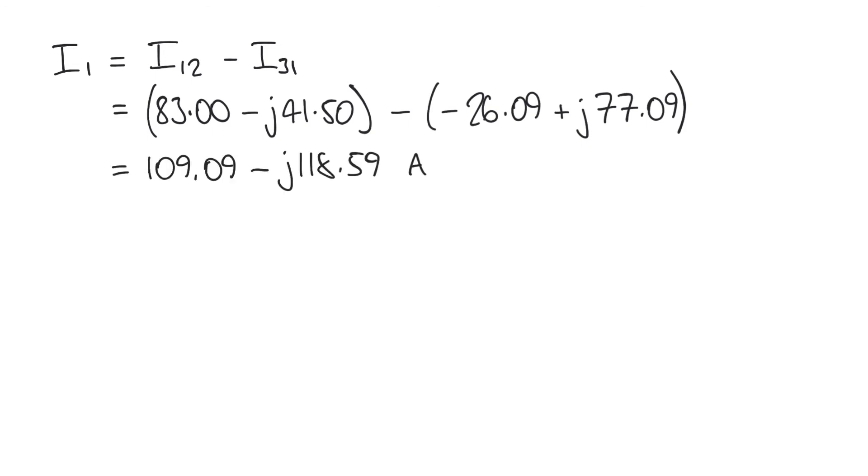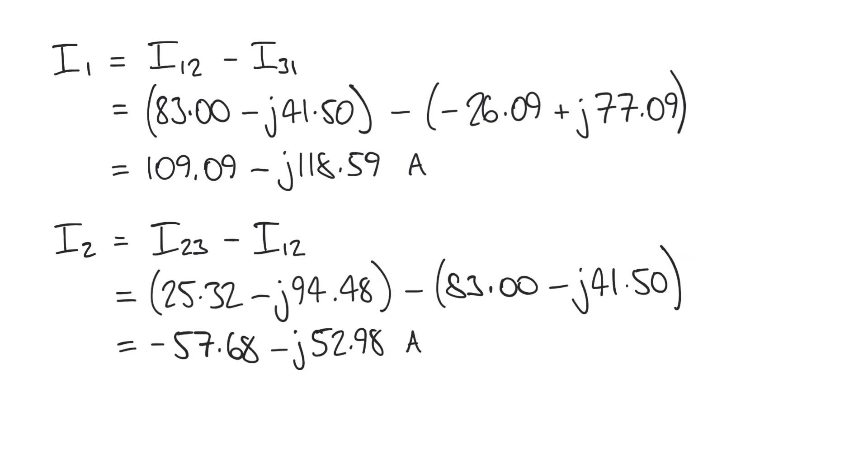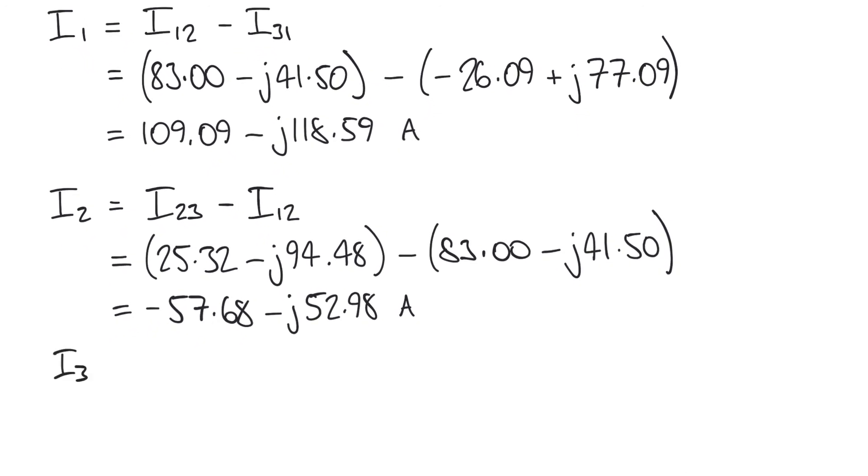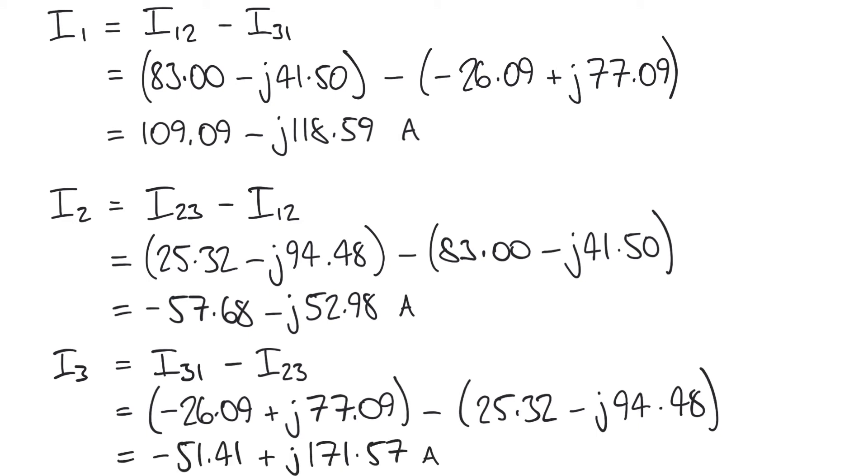We can do very similar for I2, which is I23 minus I12. Putting those values in, we get a result of minus 57.68 minus J52.98. And for I3, we said was I31 minus I23. Again we know the values of those phase currents, so we get a result of minus 51.41 plus J171.57 amps.